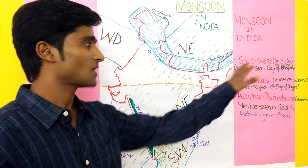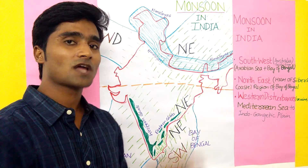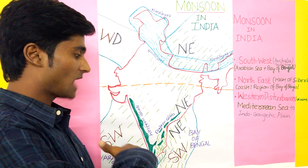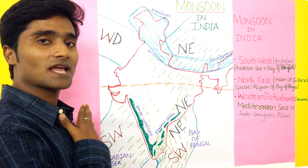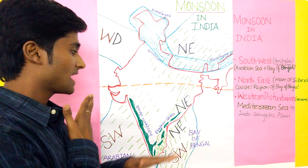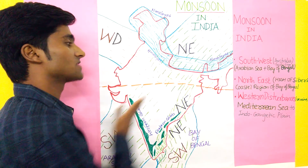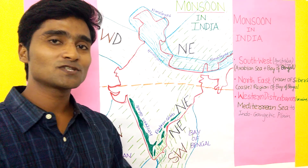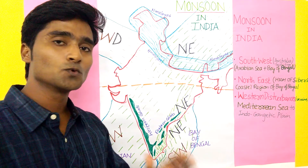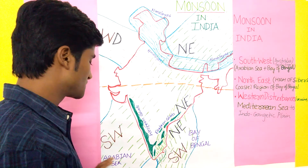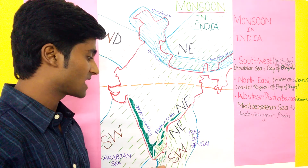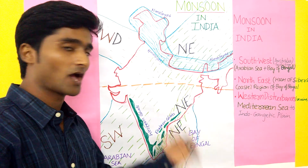The Southwest monsoon comes from Australia, from the Southeast direction, and after crossing the equator it goes in a Southwest direction. The Southwest monsoon has two branches — first, the Arabian Sea branch, and second, the Bay of Bengal branch.